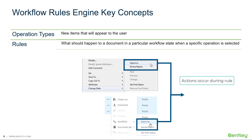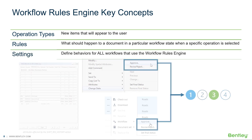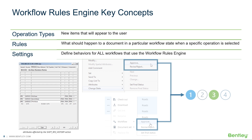Workflow Rules are used to define what should happen to a document in a particular workflow state when a specific operation is selected on the Document Change State menu in ProjectWise Explorer and on the Document Workflow menu in ProjectWise 365 Work Area Connections. Workflow Rules Settings define behaviors for all workflows that use the Workflow Rules Engine, especially for controlling revision attributes.